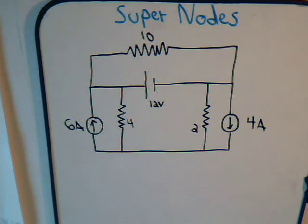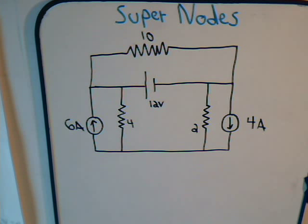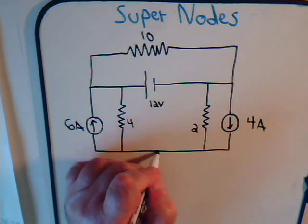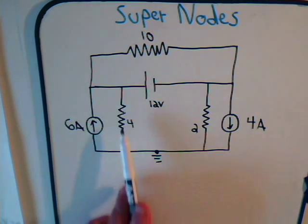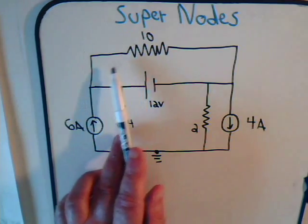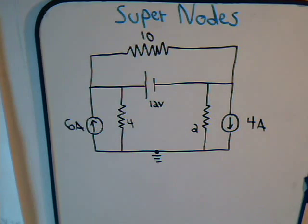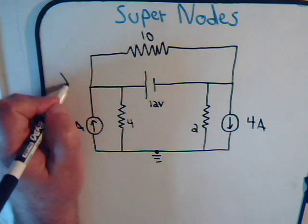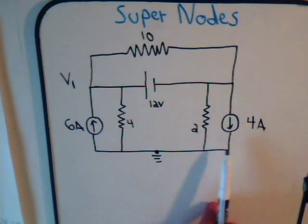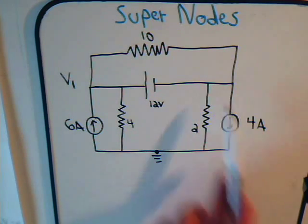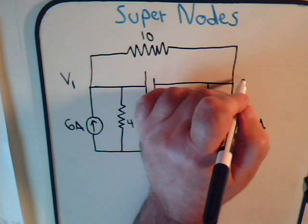When we look at the circuit we realize that the bottom part is a single node, and that single node is grounded. Then here we have another node where several branches all comprise a single node, and we'll say that node is at a voltage of V1 volts. Over here we have a second node comprised of several branches, and that second node we'll say is at a voltage of V2 volts.